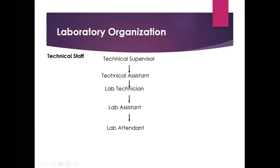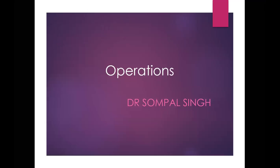In laboratory organization, the staff is divided into medical staff and technical staff. The technical staff hierarchy is: technical supervisor at the top, then technical assistant, then lab technician, then lab assistant, and then lab attendant. Lab attendants help lab assistants in performing various tests. Lab technicians perform specialized tests, while technical assistants and technical supervisors supervise the entire process.